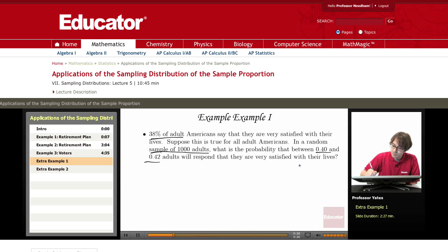Well, we're assuming that p, the population proportion, is 0.38. I'm taking a random sample of 1,000. So clearly, n times p is going to be greater than 5, and n times 1 minus p is also going to be greater than 5. So because of that, I can use the central limit theorem.